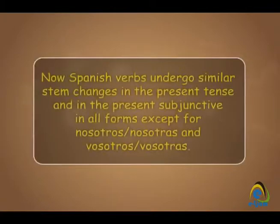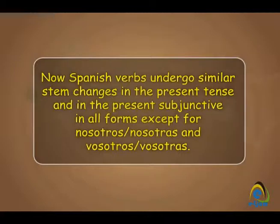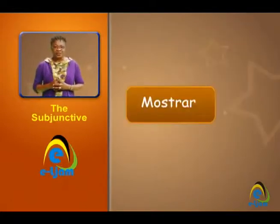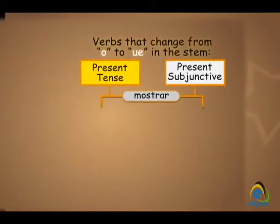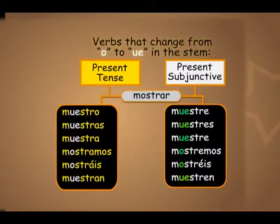Spanish verbs undergo similar stem changes in the present tense and in the present subjunctive in all forms, except for nosotros, nosotras, vosotros, and vosotras. For example, let's look at some verbs that change from O to UE in the stem. Mostrar is one example. Present tense: muestro, muestras, muestra, mostramos, mostrais, muestran. And for the subjunctive: muestre, muestres, muestre, mostremos, mostreis, muestran.